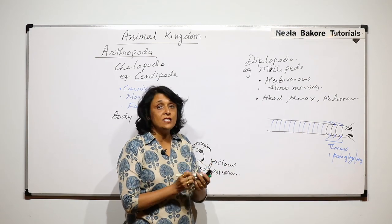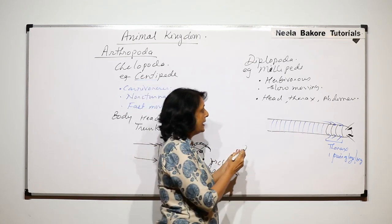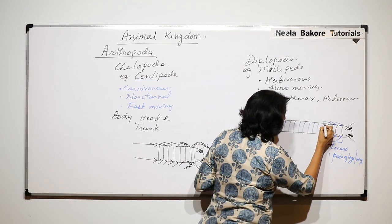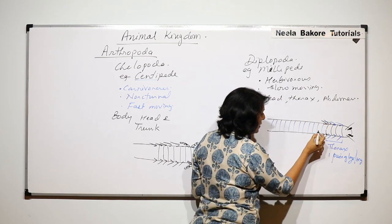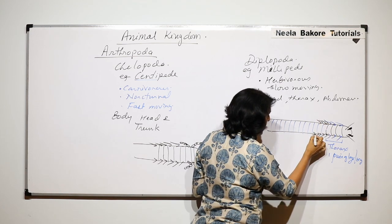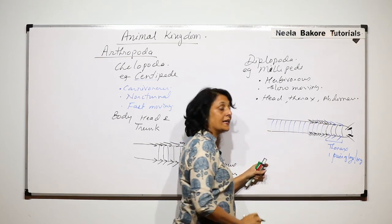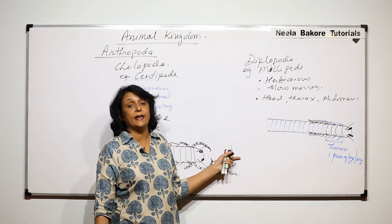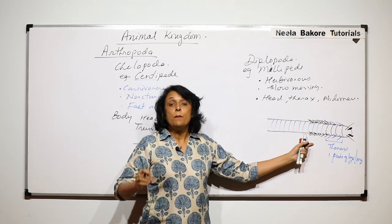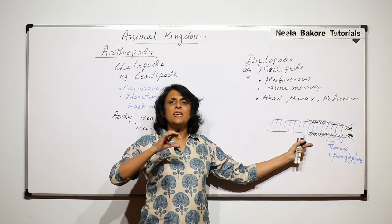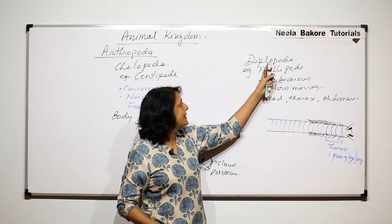Each abdominal segment has two pairs of walking legs, so every segment has two pairs. These legs are jointed, as arthropod means they have jointed appendages. Because the body has so many legs, it appears as if there are millions of legs.